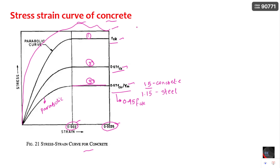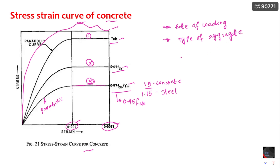Coming to the stress-strain curve of concrete, what are the main factors on which its characteristics depend? The first factor is the rate of loading, the second is the type of aggregate, and the third is the strength, age of concrete, and curing conditions. These are the factors on which the stress-strain characteristics depend.